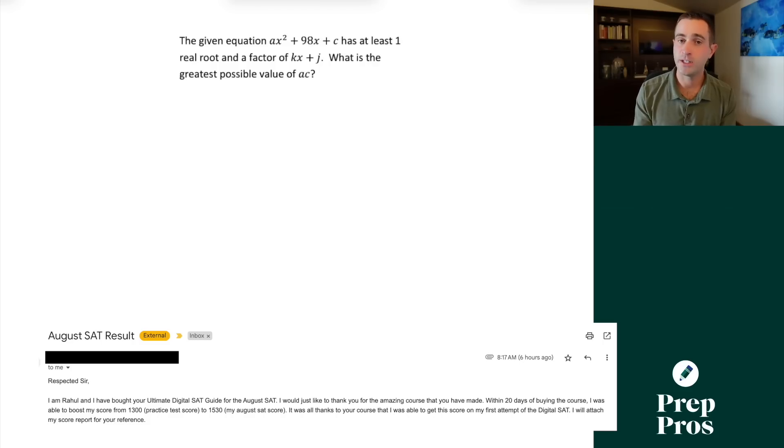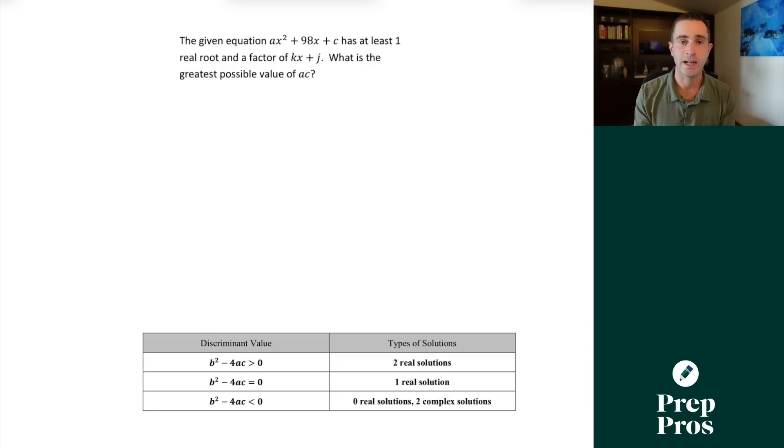The first thing that you're definitely going to see on your digital SAT and actually are far easier than they generally look once we learn the rules are discriminant questions. These show up on pretty much every single blue book test. And from students taking the digital SAT, pretty much every single one sees at least one of these questions.